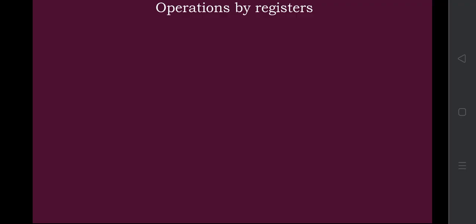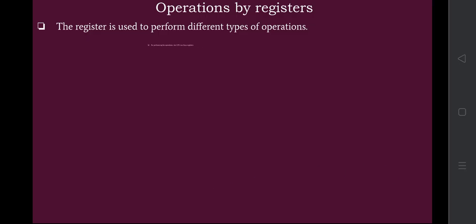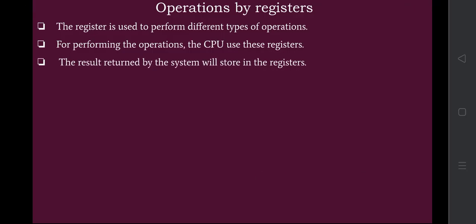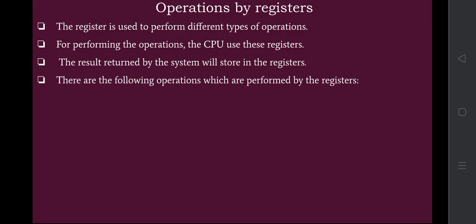Now let us see what operations registers can help perform. Registers are used to perform different types of operations. The CPU uses these registers, meaning a central processing unit can access them to perform arithmetic or mathematical calculations. The result returned by the system is stored in the register. Registers can perform fetch, decode, and execute operations.